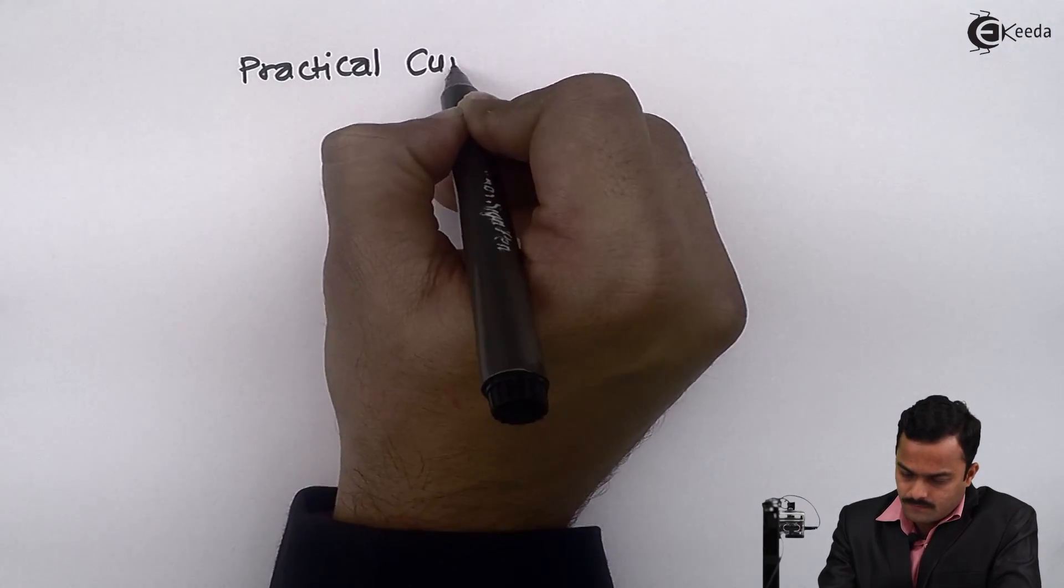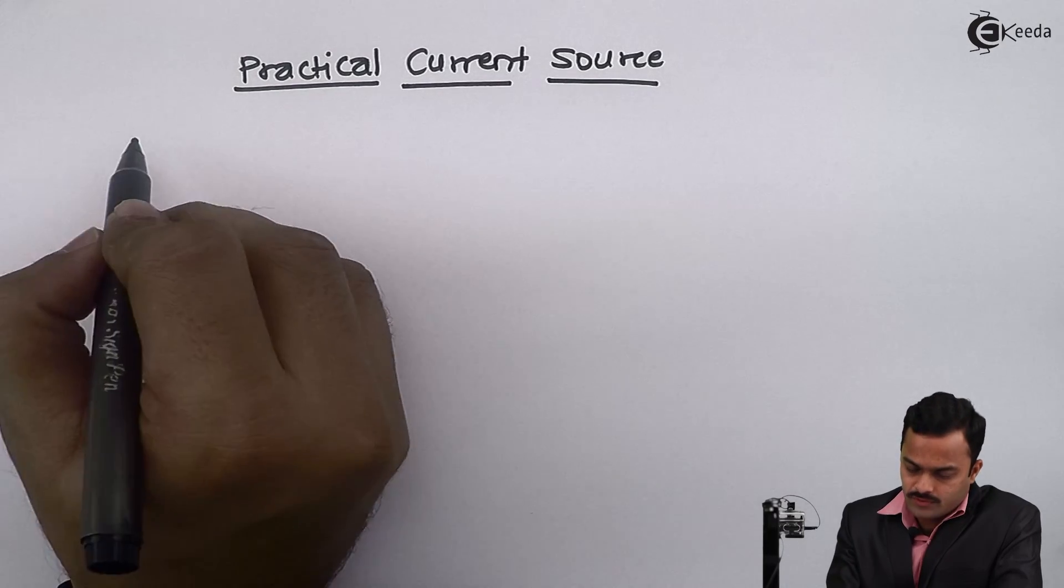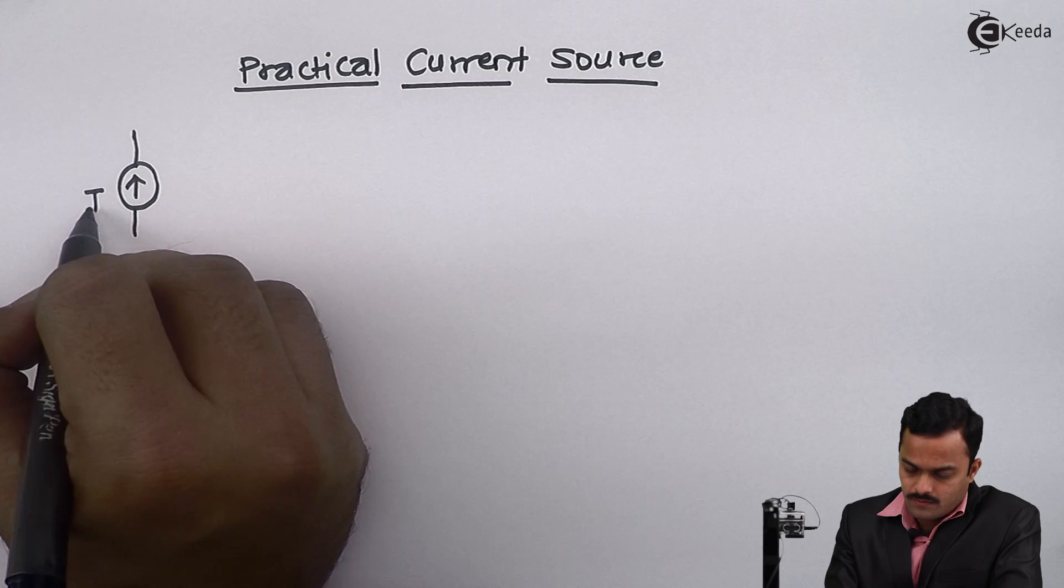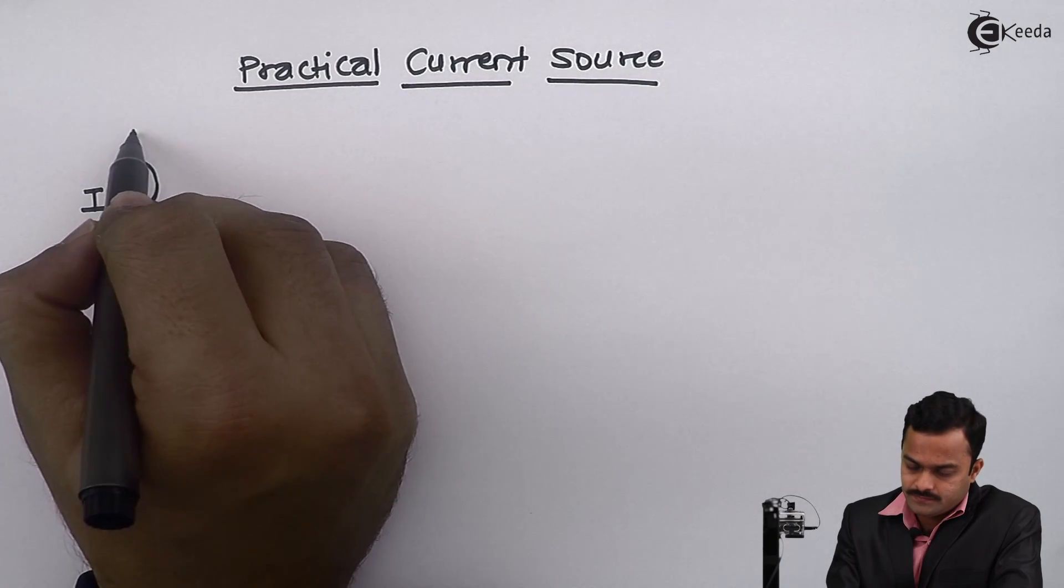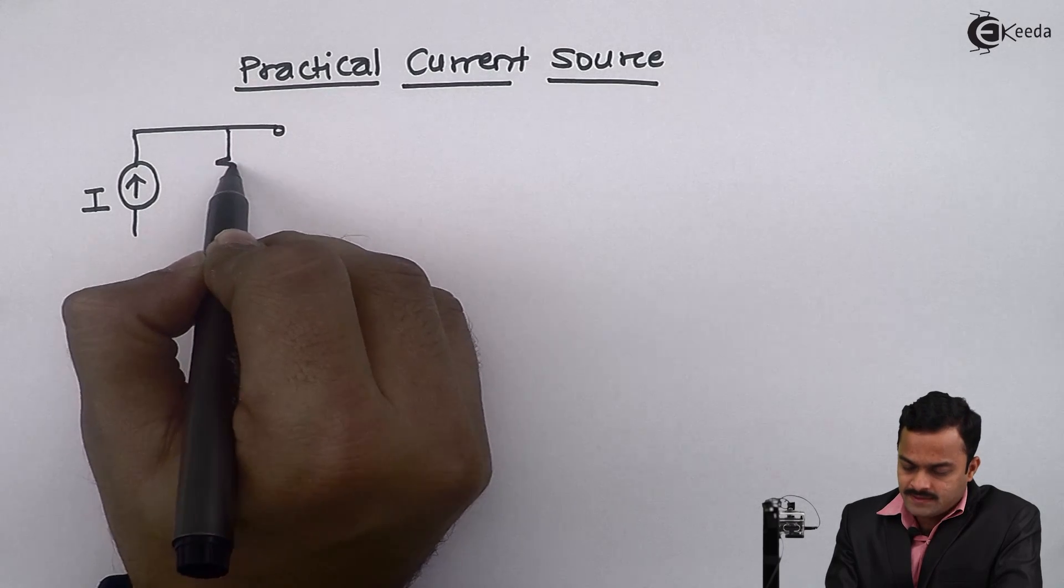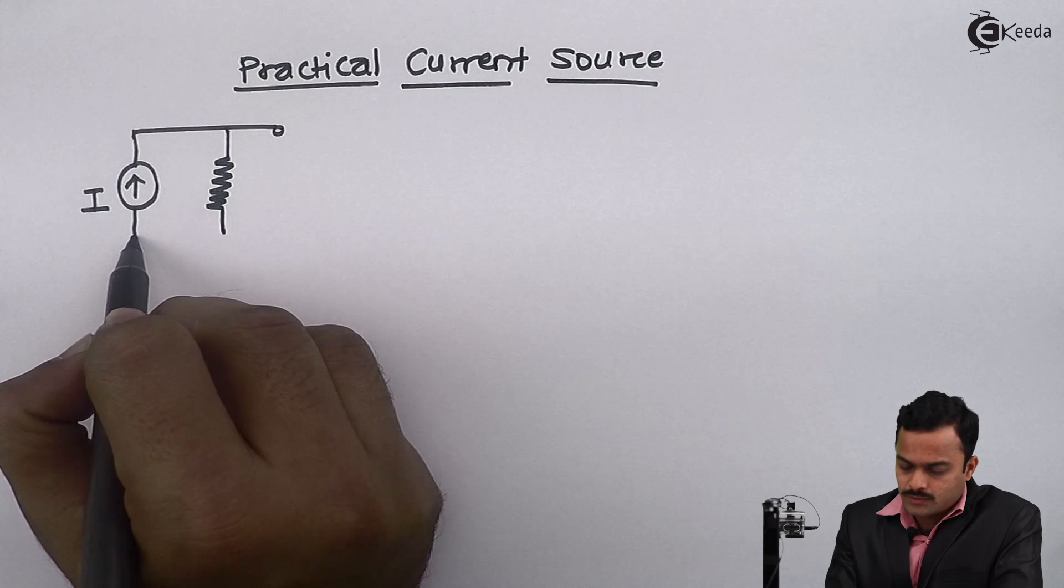Hello friends, in this video we are going to see a practical current source and how it is different than that of ideal current source. So I am considering a current source of I ampere and a very large resistance connected parallel to it.